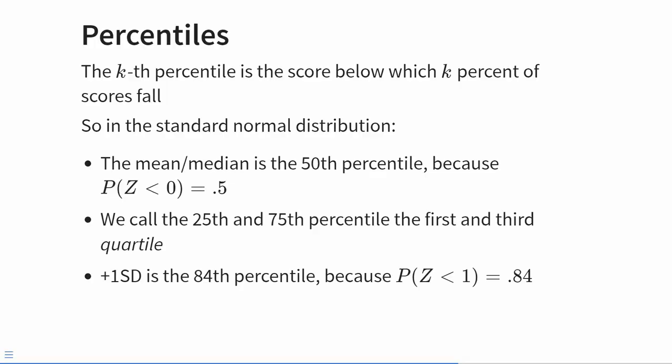Another way to talk about probabilities is in terms of percentiles. The kth percentile is the score below which k percent of scores fall. For example, the median — which in a normal distribution is identical to the mean — divides a sample exactly in half, making it the 50th percentile. We also have special names for the 25th and 75th percentiles: the first and third quartile. By extension, plus one standard deviation is the 84th percentile: 50% of cases are below the mean and 34% are between the mean and plus one standard deviation, so 50 + 34 = 84.